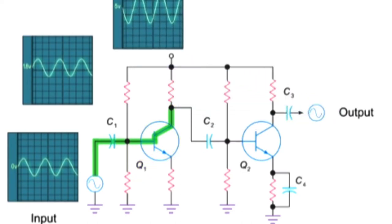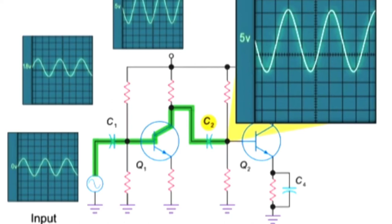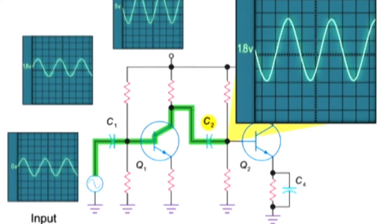Before reaching the second transistor, the signal passes through another coupling capacitor, C2, which also strips away the DC voltage. However, the signal will once again pick up a low DC voltage of 1.8 at the base of the second transistor.